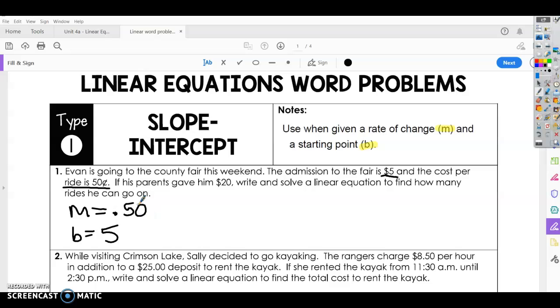So we can start there and then build an equation. If you remember, your slope-intercept form equation is y equals mx plus b. So we know m and b, so we're going to plug that in. For this equation, we're going to write y equals 0.50 times however many rides, you can use r or x, whatever variable you want to, and then plus the $5 to get into the fair.